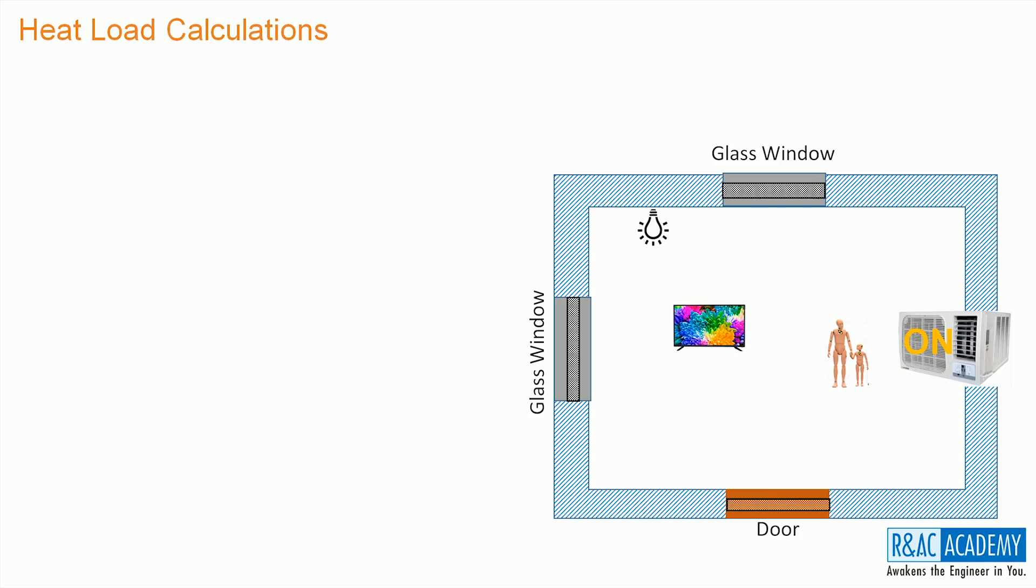Slowly, the temperature of the room goes down and when the room temperature reaches 24 degrees centigrade, I will switch off the AC. We all know that the temperature of the room will start increasing, but why?